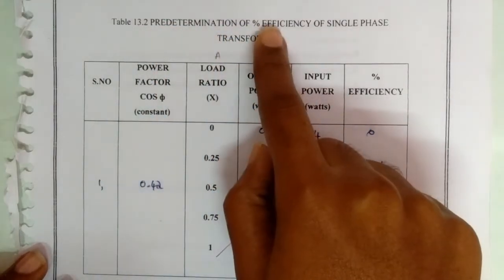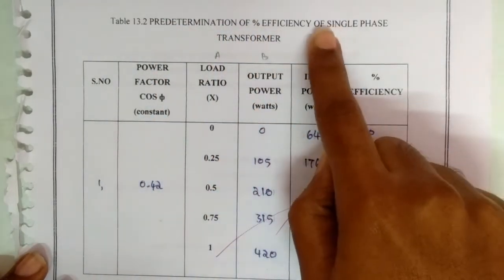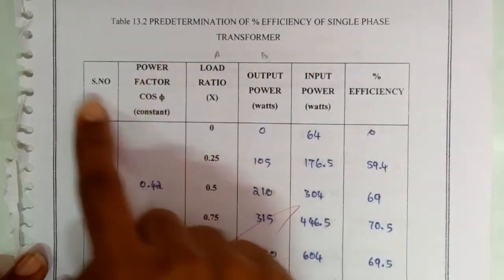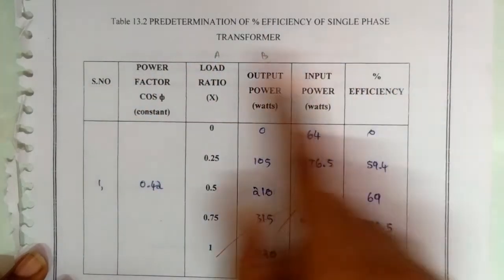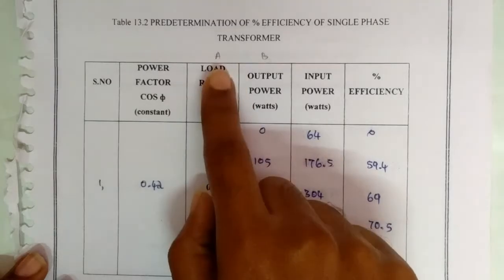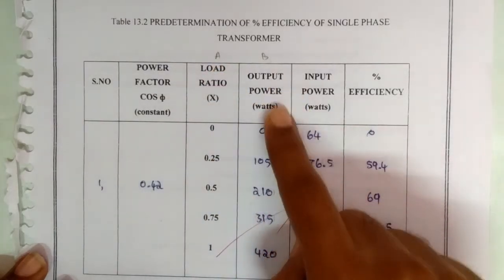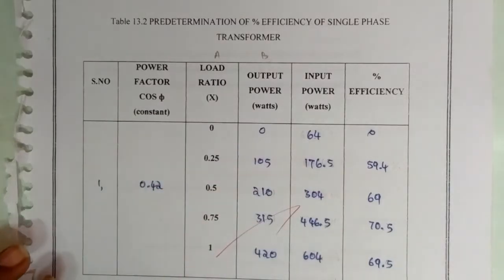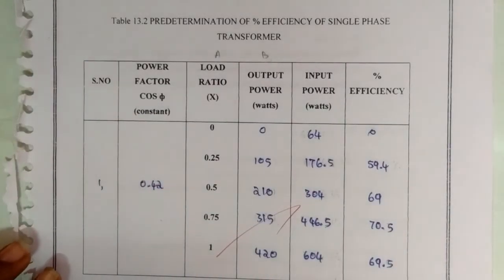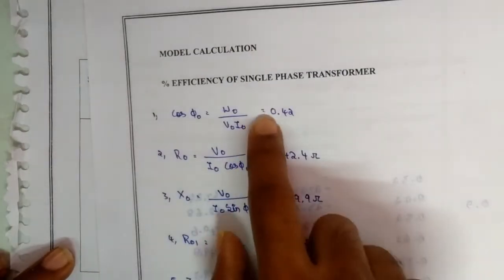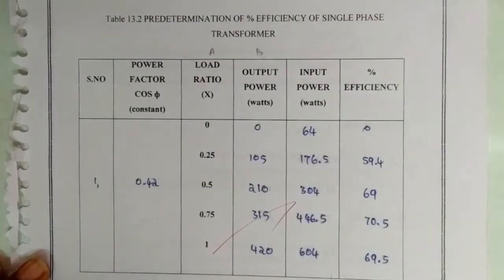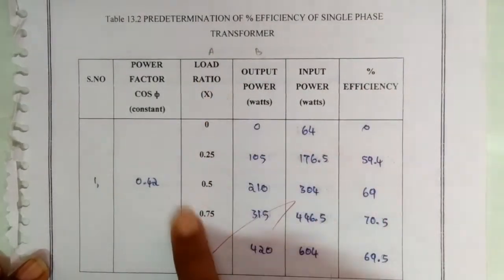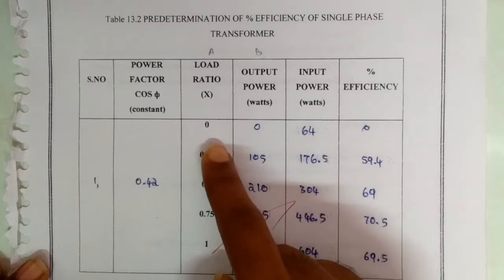For predetermination of percentage efficiency of single phase transformer, the tableau column will be like this one: power factor, load ratio, output power, input power, and percentage efficiency. Power factor is the value we got from here, 0.42. And load ratio will be given, it's 0.25, 0.75, and 1.